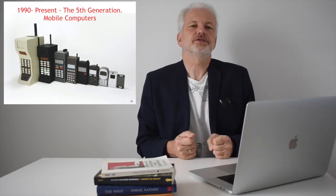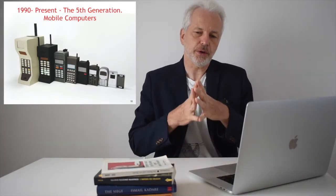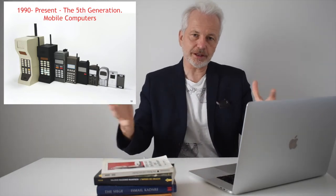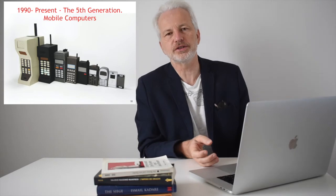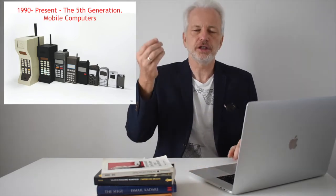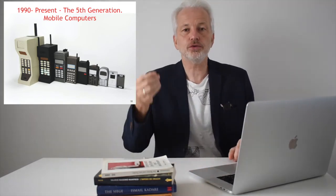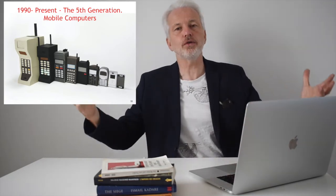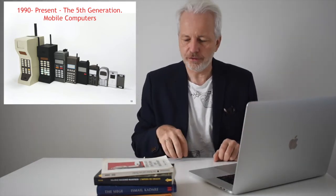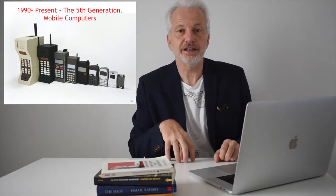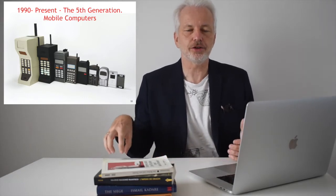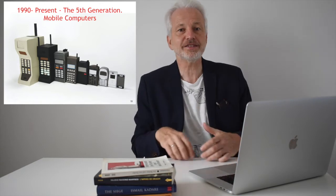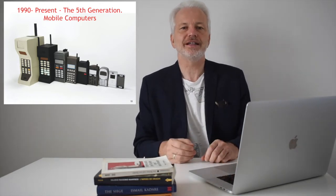In the fifth generation we see a wide spread of operating systems across multiple devices — not just computers as we consider them today. We saw the adoption on mobile phones, handheld devices, and overall throughout everyday life. Operating systems are now present on washing machines, vacuum cleaners, and a variety of devices that support our daily lives.